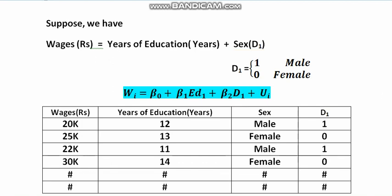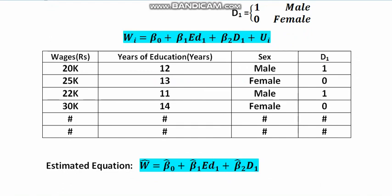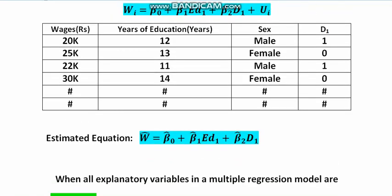If we have a number of samples, what would your data sample or dataset look like for this multiple regression model? Suppose you collect wages (how much they earn in a month or year), years of education (maybe 12 years, 13 years), and now the most important thing: the dummy variables. You identify the sex or gender first, then accordingly put the value of the dummy variables.